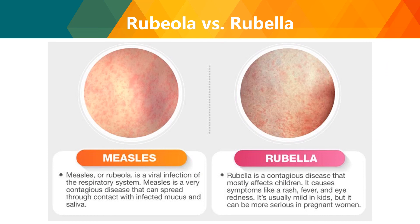Rubeola and rubella: measles (rubeola) is a viral infection of the respiratory system, very contagious and spreading through contact with infected mucus and saliva. Rubella is a contagious disease mostly affecting children, causing rash, fever, and irritation. It is usually mild in kids but more serious in pregnant women. Vaccines are introduced in younger years to prevent these infections and to protect pregnant women from miscarriage or maternal and fetal death.